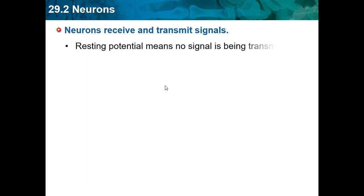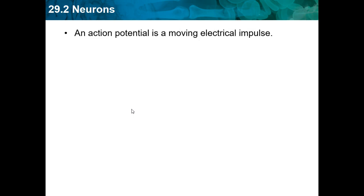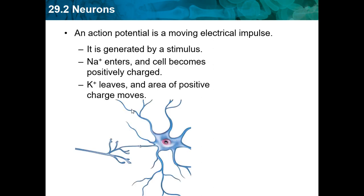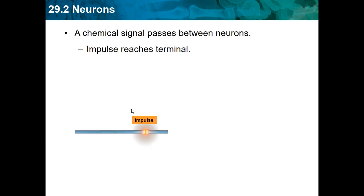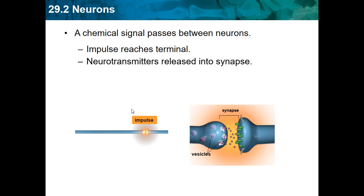Neurons receive and transmit signals. Resting potential means no signal is being transmitted. An action potential is a moving electrical impulse generated by a stimulus. A chemical signal passes between neurons when impulses reach the axon terminal — neurotransmitters are released into the synapse. The end of the axon terminal faces the dendrites of the next neuron, and in between there's a small gap where the chemical signal is sent across.